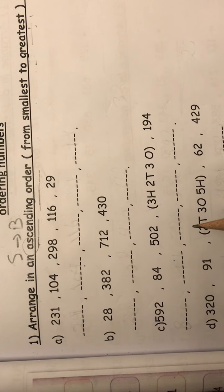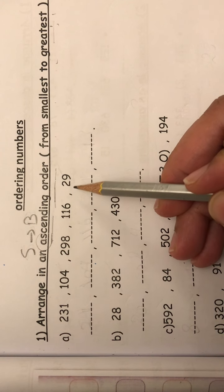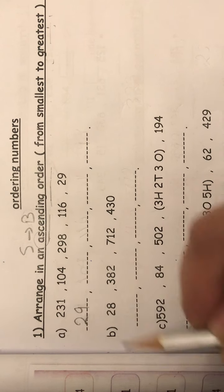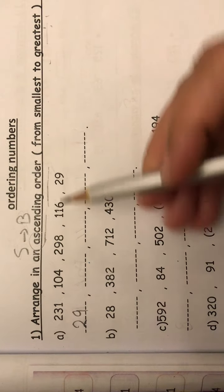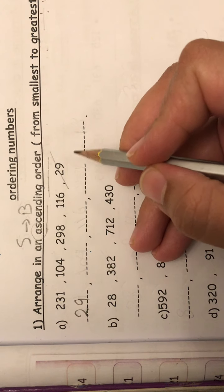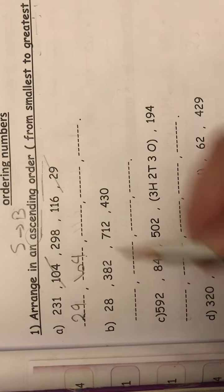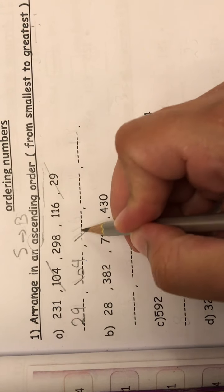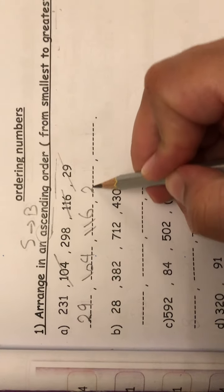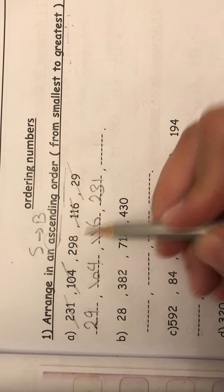Let's see together. So we will start with a small number. Excellent. So we will write 29. And if you write a number, you must slash it. After 29, excellent, 104. After 116, 231, and 298.